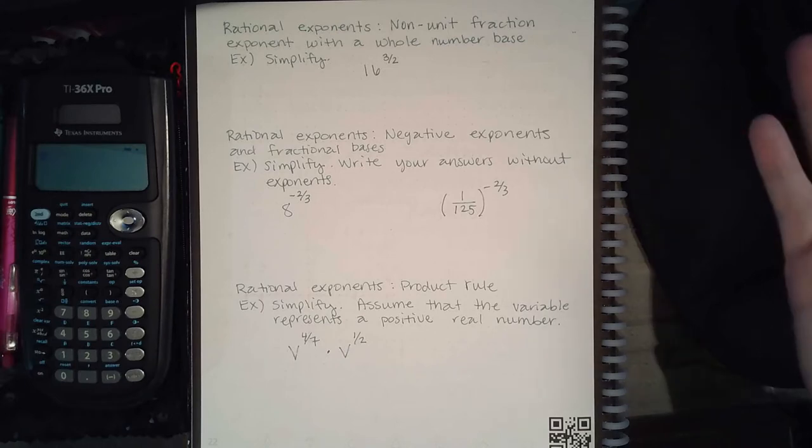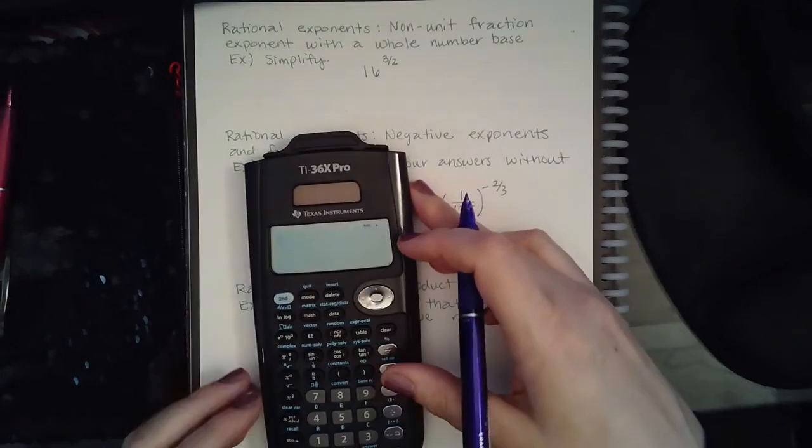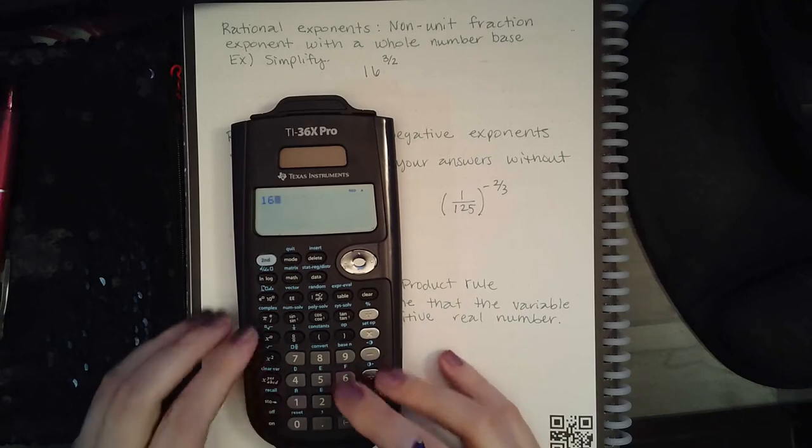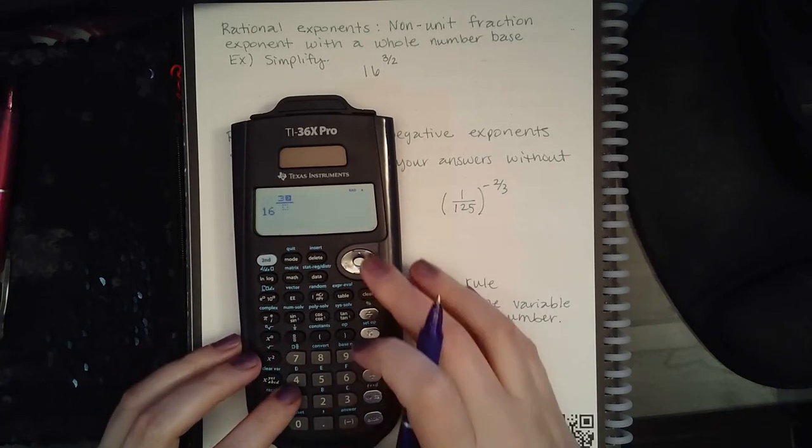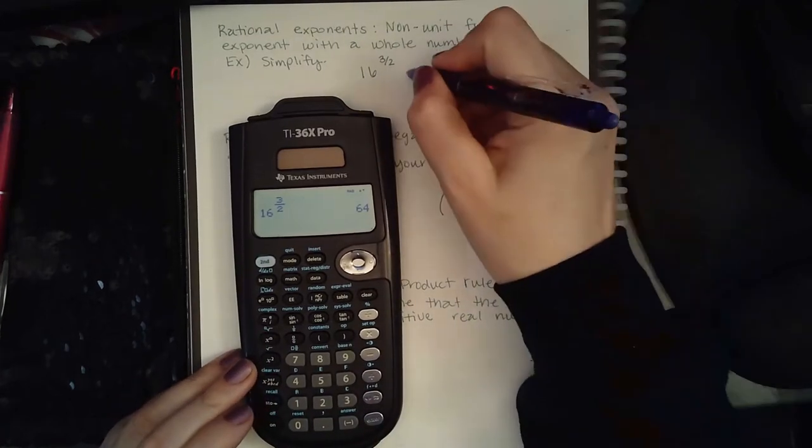The next topic was rational exponents and it's non-unit fraction exponent with a whole number base. So that's what the title is called, but essentially you're doing the problem exactly as you would before. Now if my calculator gives me decimals then I'm not going to be able to do this problem in the calculator. So let me see, raise it to the 3 over 2, and it does work it out for me.